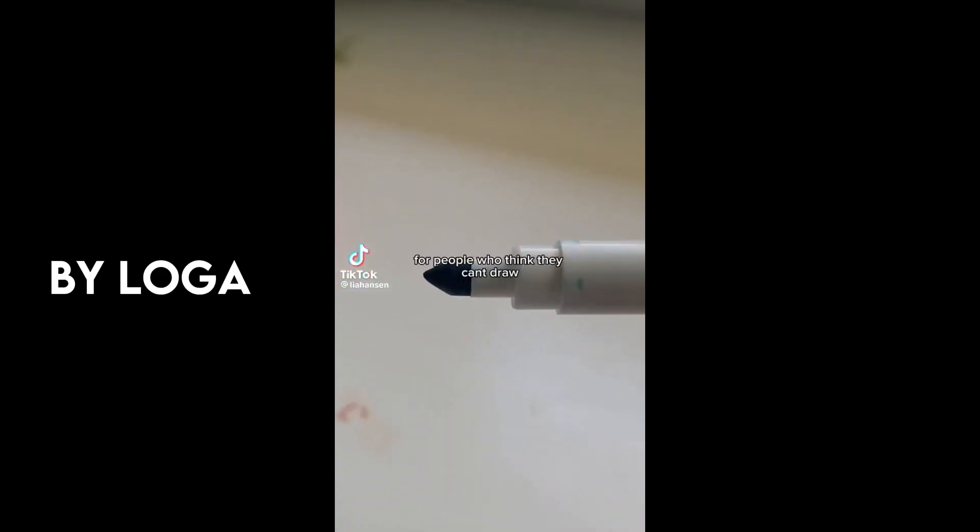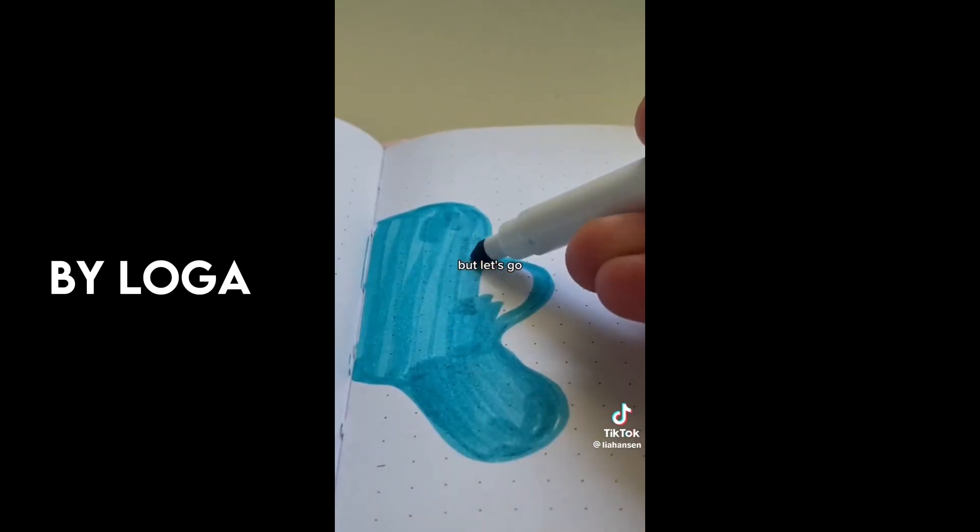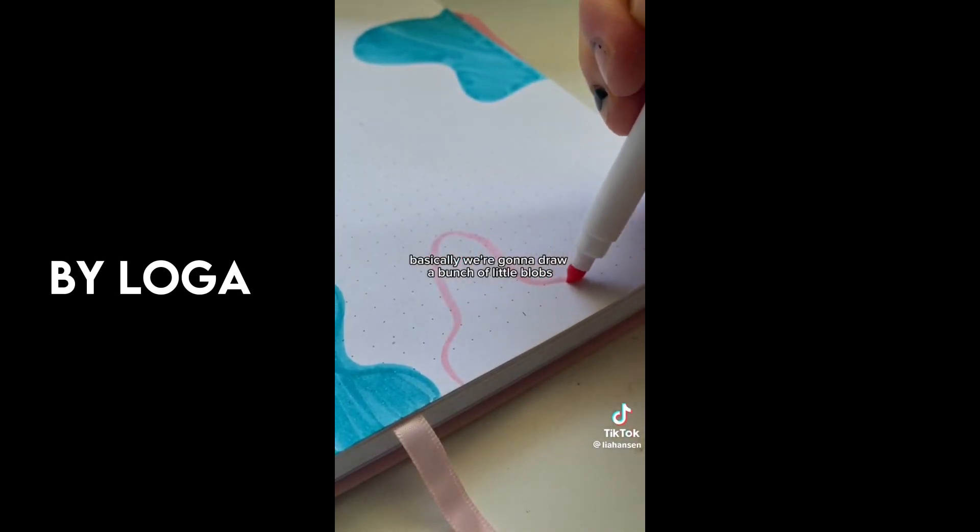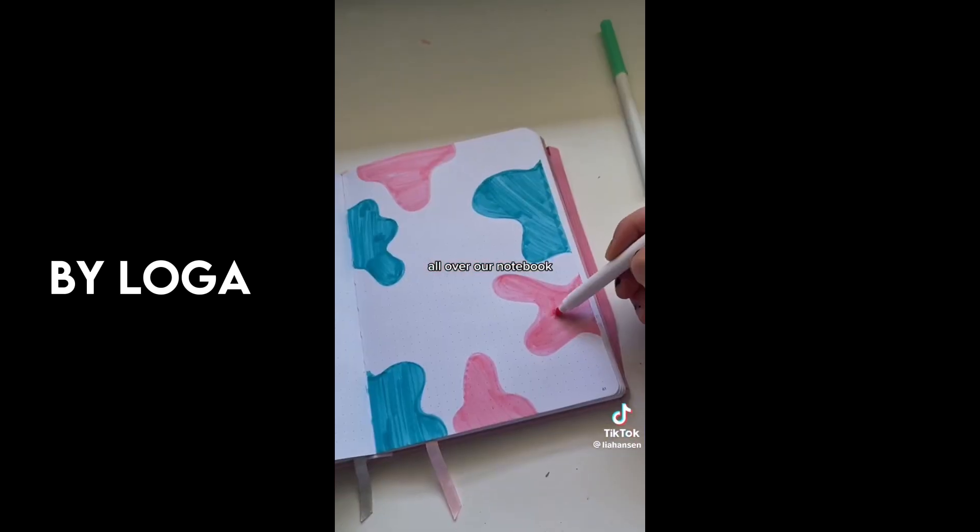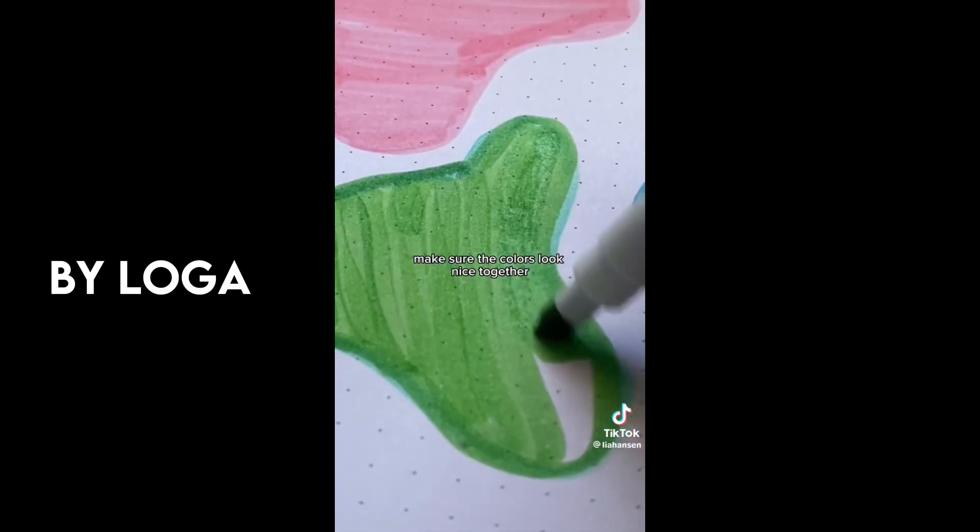Welcome back to easy doodle ideas for people who think they can't draw, which number one isn't true, but let's go. So basically we're gonna draw a bunch of little blobs all over our notebook. You can use one color, you can use two colors, I'm using three colors, it really does not matter. Just make sure the colors look nice together.